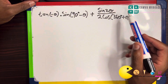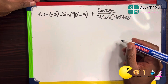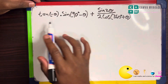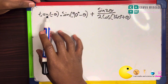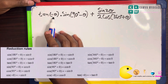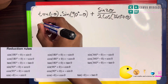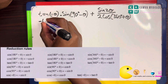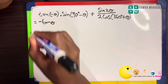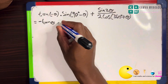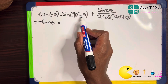We can see that we've got a double angle here. Starting with tan of negative theta — tan of a negative angle gives us negative tan of theta. We multiply that by sine of (90 degrees minus theta).